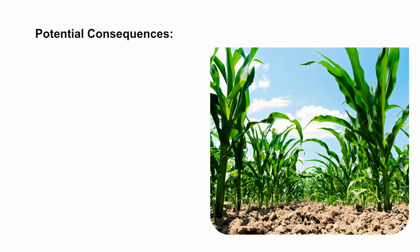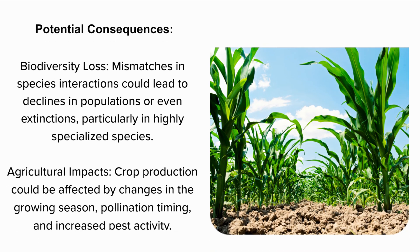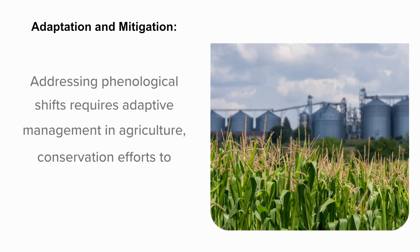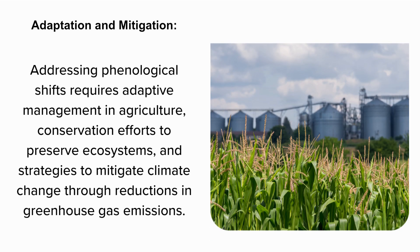Potential Consequences. Biodiversity Loss: Mismatches in species interactions could lead to declines in populations or even extinctions, particularly in highly specialized species. Agricultural Impacts: Crop production could be affected by changes in the growing season, pollination timing, and increased pest activity. Adaptation and Mitigation: Addressing phenological shifts requires adaptive management in agriculture, conservation efforts to preserve ecosystems, and strategies to mitigate climate change through reductions in greenhouse gas emissions.